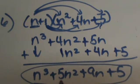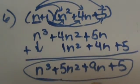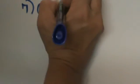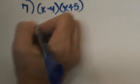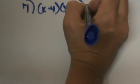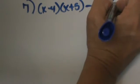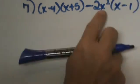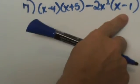So our final answer is n cubed plus 5n squared plus 9n plus 5. Notice when we take a binomial times a trinomial we end up with 4 terms — a polynomial. Now let's look at a fancier problem, number 7. We have x minus 4 times x plus 5, which is a binomial times a binomial, and then we subtract 2x squared times x minus 1, which is a monomial times a binomial.